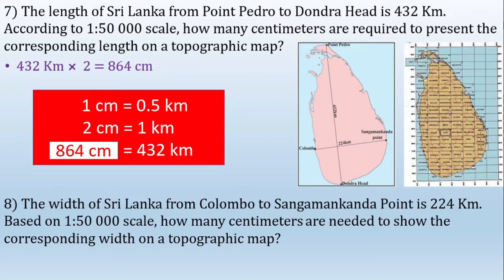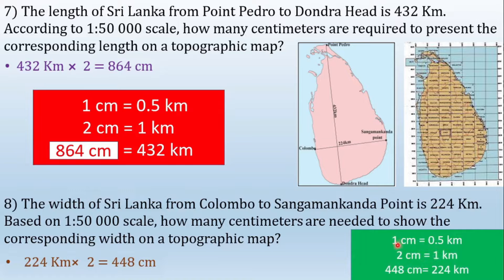The width of Sri Lanka from Kalambo to Sangamankhandi point is 224 kilometers. Based on the 1:50,000 scale, how many centimeters are needed to show the corresponding width on a topographic map? We do the same calculation: 224 kilometers multiplied by 2 equals 448 centimeters. Since 1 cm equals 0.5 km and 2 cm equals 1 km, 224 km gives 448 centimeters. That is the width of Sri Lanka marked on the map according to the 1:50,000 scale.